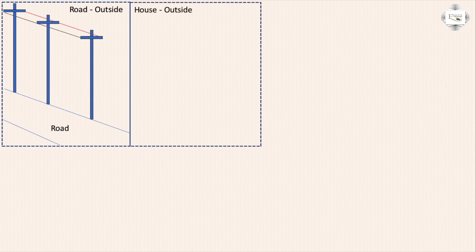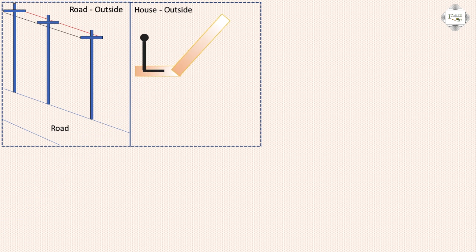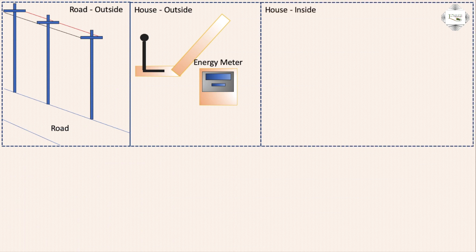Second step: house outside means the energy meter is set on the house outside. How inside means the inside connection follows from the energy meter placement.